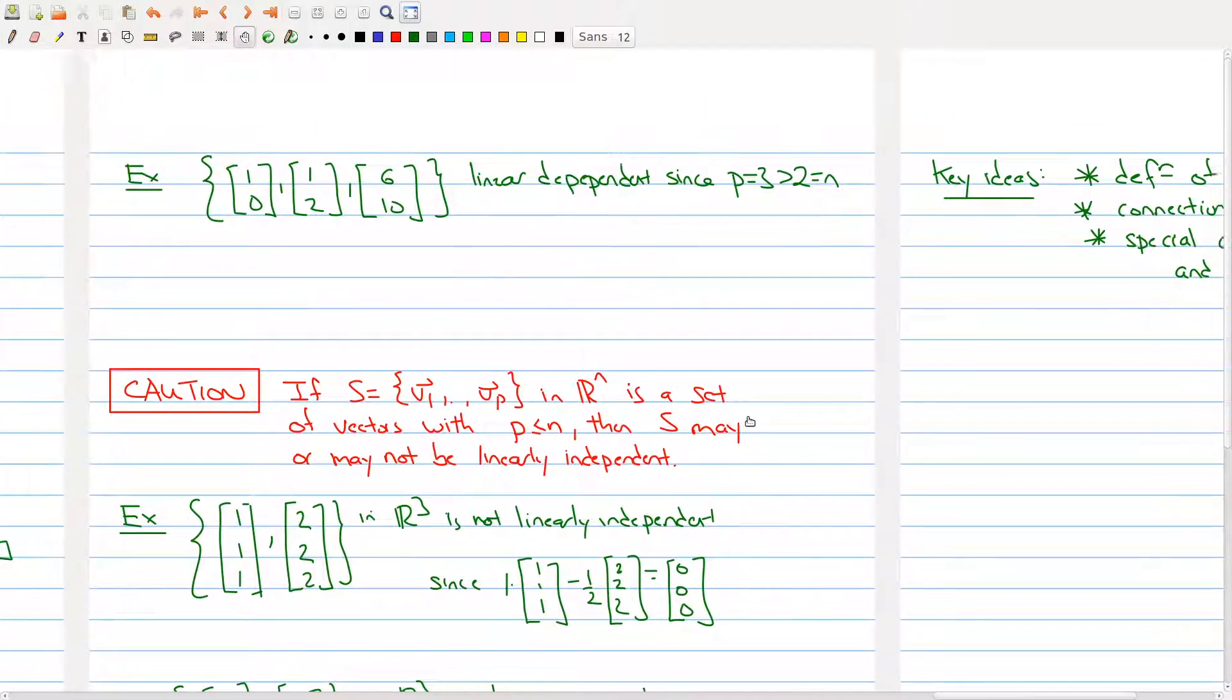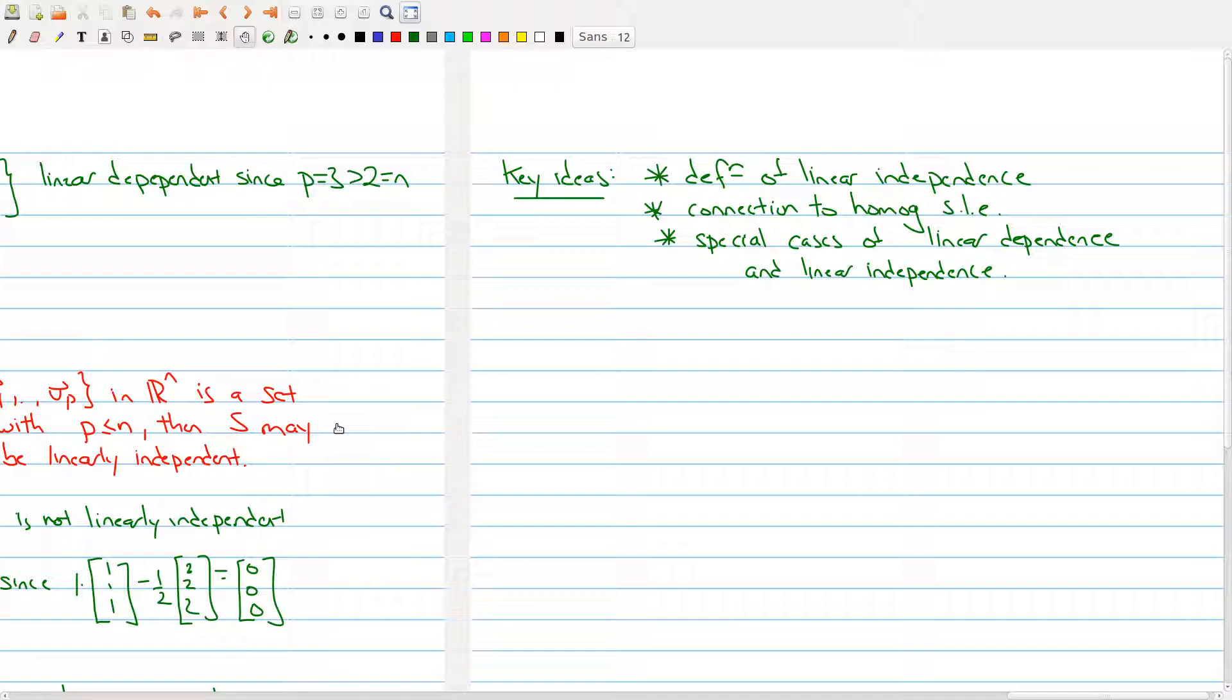So, a bunch of key ideas to take away from today's lecture. First, you should internalize the definition of linear independence. That's a key concept in linear algebra. You should understand the connection to homogeneous systems of linear equations. That is, you have a bunch of vectors and you want to check if they're linearly independent. That means transform it into a homogeneous system of linear equations.